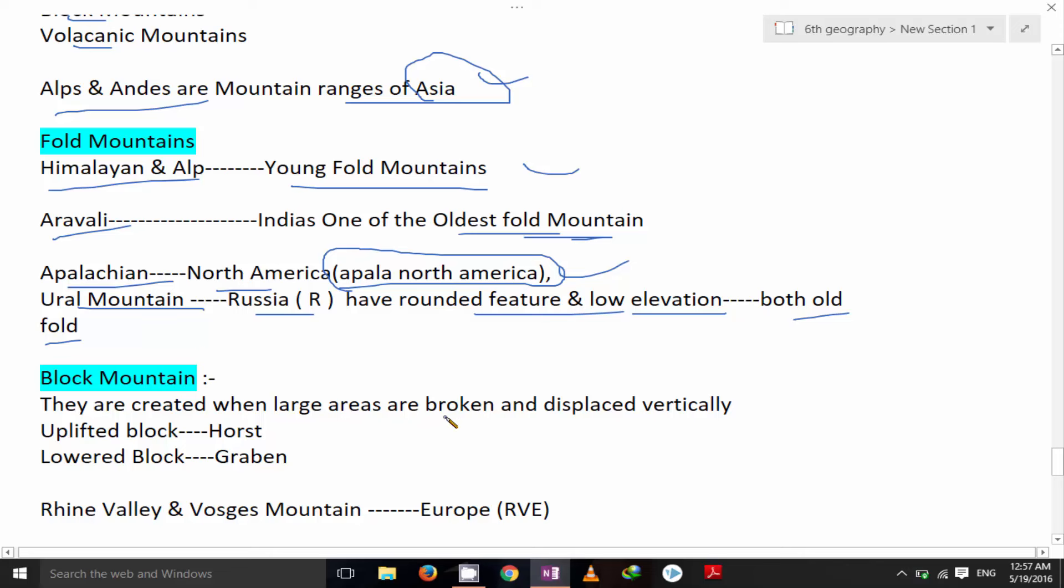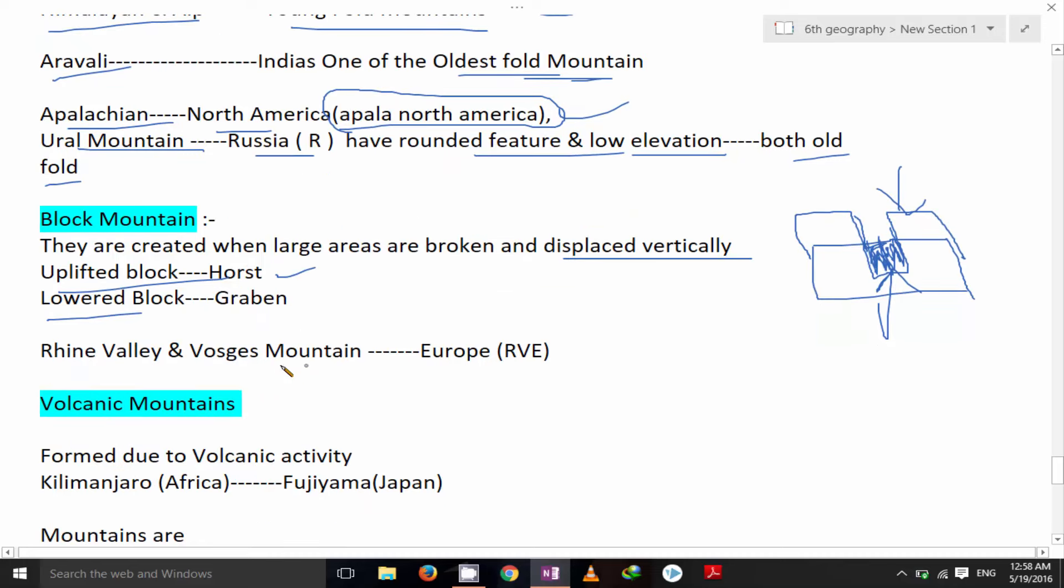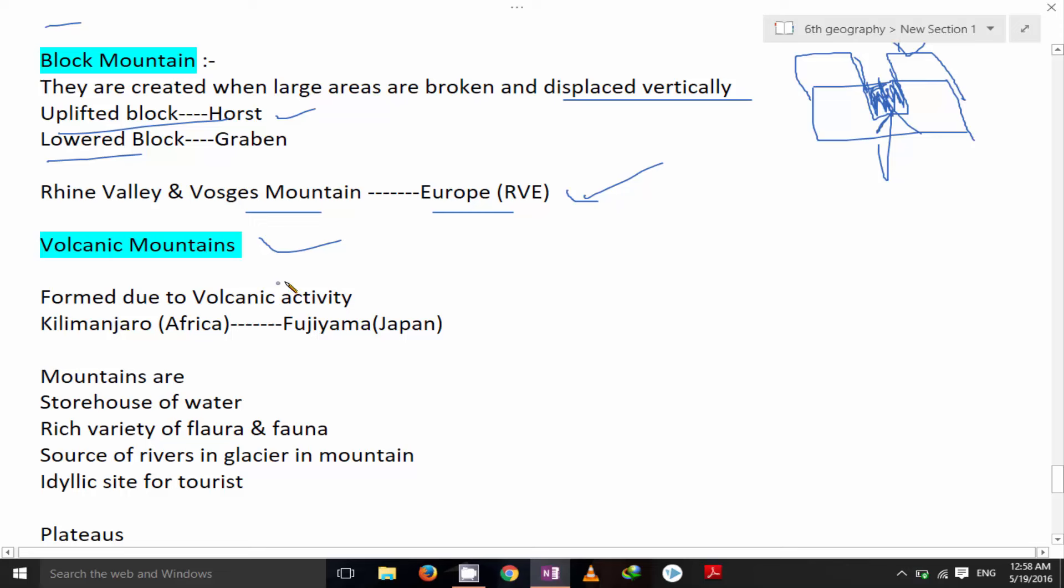Block mountain. They are created when large areas are broken and displaced vertically. If this area is broken, this is the broken area. Two are uplifted block, we call it as horst, and lower block is graben. Rhine Valley and Vosges mountain group are the examples of block mountain. Volcanic mountains formed due to volcanic activity. Kilimanjaro Africa and Fujiyama Japan are the examples of volcanic mountains.